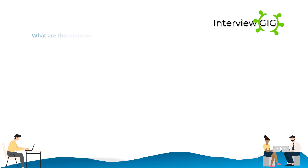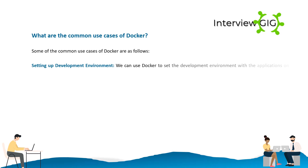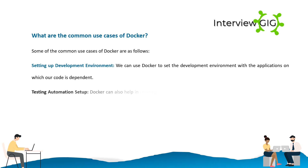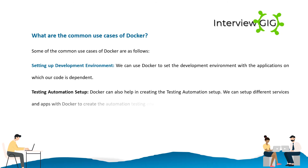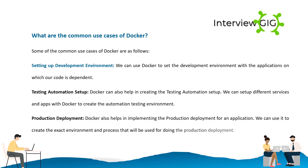What are the common use cases of Docker? Setting up development environment — we can use Docker to set up the development environment with the applications on which our code is dependent. Testing automation setup — Docker can also help in creating a testing automation setup. We can set up different services and apps with Docker to create the automation testing environment. Production deployment — Docker also helps in implementing production deployment for an application. We can use it to create the exact environment and process that will be used for doing the production deployment.